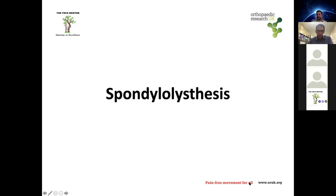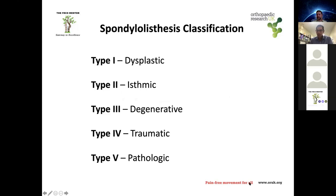Moving on to spondylolisthesis — the Wiltse-Newman classification divides spondylolisthesis into: Type 1, dysplastic; Type 2, isthmic (pars defect causing subluxation); Type 3, degenerative (wear and tear of facet joints in older patients); Type 4, traumatic (associated with fractures such as pedicle fractures); and Type 5, pathologic, associated with infection or tumors.